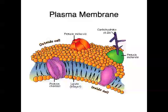The basic structure of the plasma membrane is a phospholipid bilayer, but the plasma membrane also has proteins embedded in it, which provide channels for the movement of certain molecules through the membrane. It also has cholesterol embedded in it for structural stability, and carbohydrate chains which protrude from the cell membrane and are used in cell recognition.